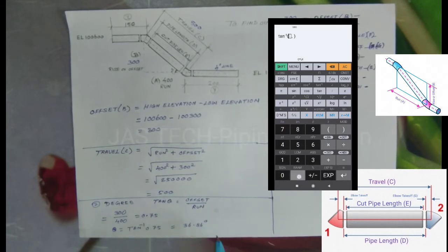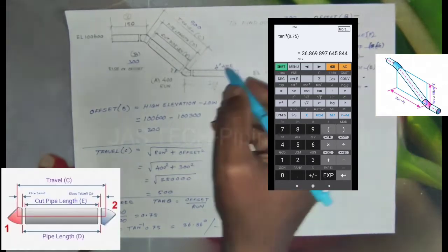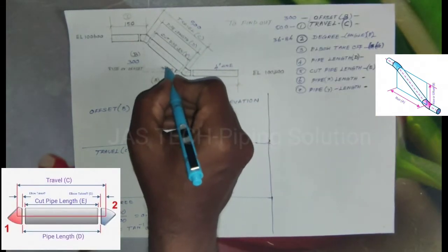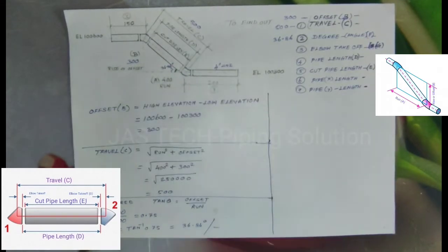It will come to 36.86 degrees. So the Degree result is 36.86, the answer for this degree.